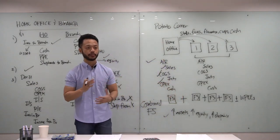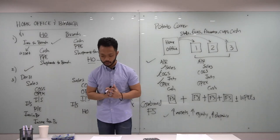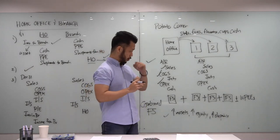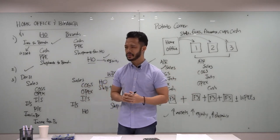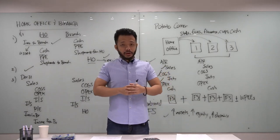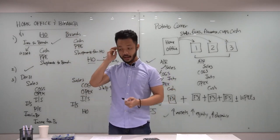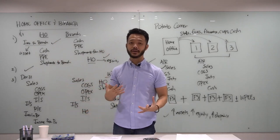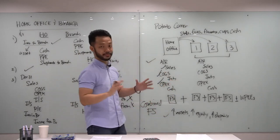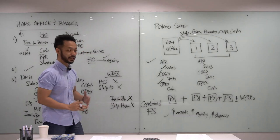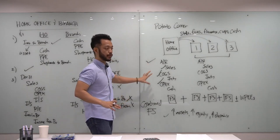That is the concept of accounting for home office and branch, or combined financial statements — and it's essentially the same concept as consolidated financial statements. What I want to emphasize is that instead of memorizing formulas, students should first understand the big picture — what we did today — and understand its effect on the financial statements.